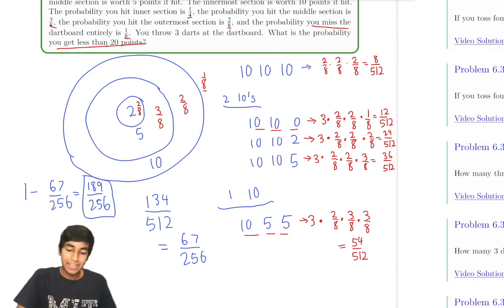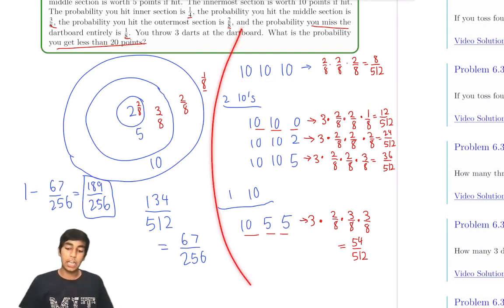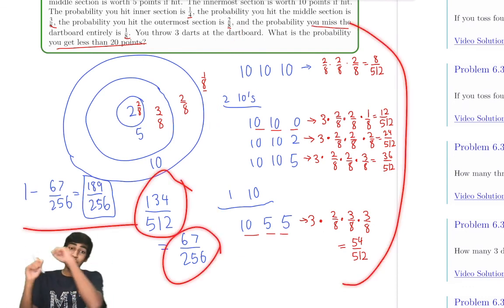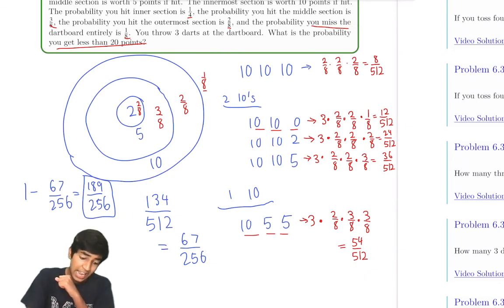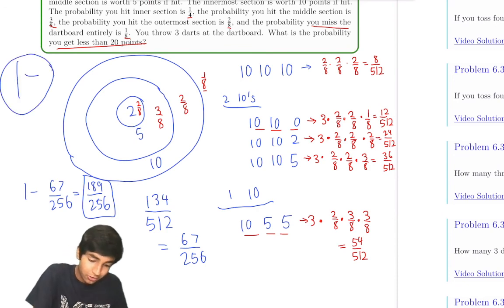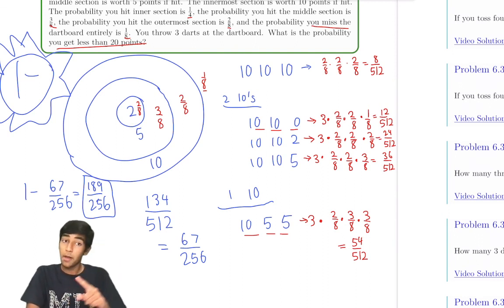A great problem. The essentials were seeing what cases give a sum of 20 or more, finding all of those by organized casework, adding them up, and then — very importantly — doing 1 minus at the end. A very common mistake is forgetting to do 1 minus because you forgot you're doing complementary counting. The problem says get less than 20 points, so the answer is 1 minus 67/256 = 189/256. Get in the habit: write 1 minus and draw a big star around it so you don't forget.